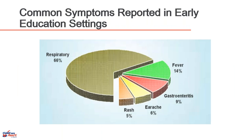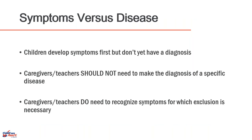According to this pie chart from 'Managing Infectious Diseases in Child Care and Schools,' respiratory symptoms make up 66% of symptoms, followed by fever at 14%. The third most common symptoms you will see in your facility are GI symptoms — vomiting and diarrhea.